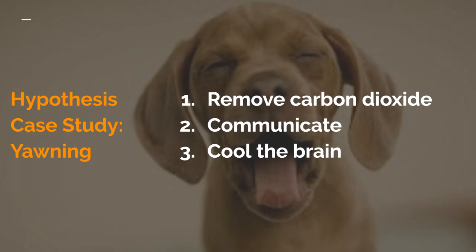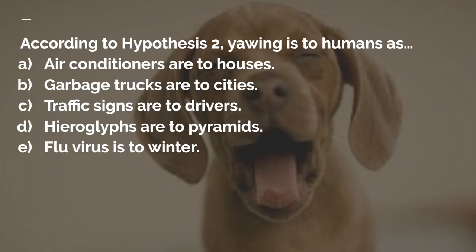Our third and final example is about yawning — why we yawn to begin with. The three theories presented are: number one, we yawn because we need to remove carbon dioxide from our body or absorb more oxygen. Another theory is that yawning is used to communicate a message or communicate environmental conditions, especially for animals that can't talk. The third theory is that yawning is to cool the brain, and there's some evidence for that in academic research. Here's the interesting question: according to hypothesis two, yawning is to humans as... pause the video and choose your answer.